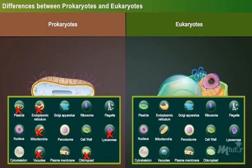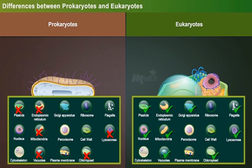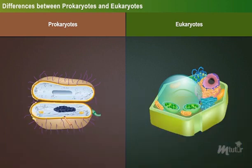Cell organelles such as mitochondria, endoplasmic reticulum, vacuoles, lysosomes, chloroplasts, centrioles and microtubules are absent in prokaryotes. In contrast, membrane-bound organelles are present in eukaryotes.